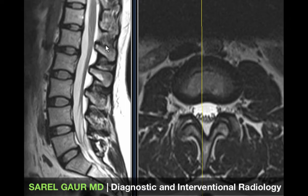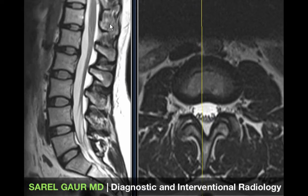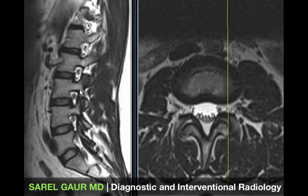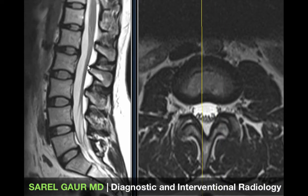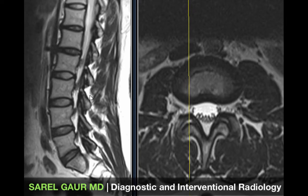Posterior to that I have the spinous processes, which are basically part of the posterior elements seen on either side of the spine. These enclose and protect the spinal canal.